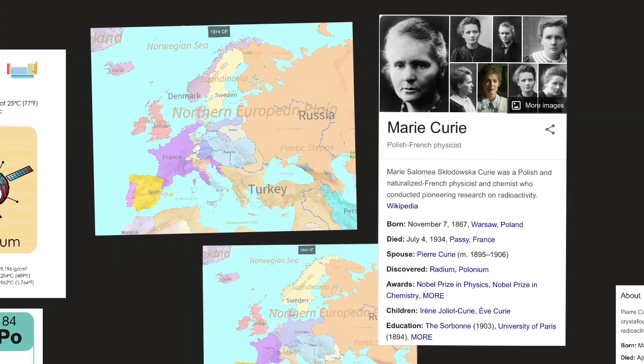Here we have Marie Curie. Marie Curie was a Polish and naturalized French physicist and chemist who conducted pioneering research on radioactivity, according to Wikipedia. She was born November 7th, 1867, Warsaw, Poland. She died July 4th, 1934 in Pasi, France. Her spouse was Pierre Curie.